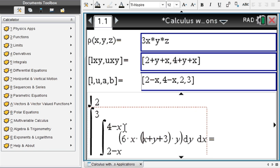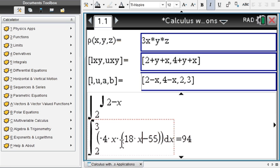See now the triple integral turns into a double integral, the double integral turns into a single integral, and you arrive at 94.